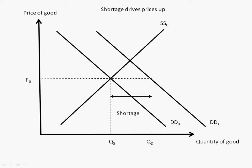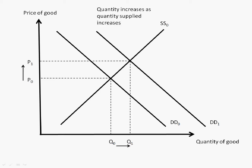There will be an upward pressure which will cause QS to increase and QD to decrease. As a result, there will be an increase in equilibrium price and quantity from P0 to P1 and Q0 to Q1.